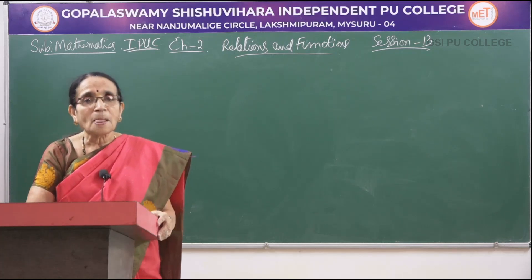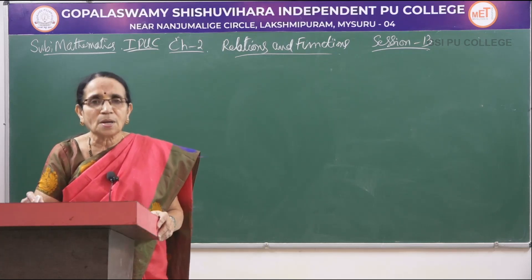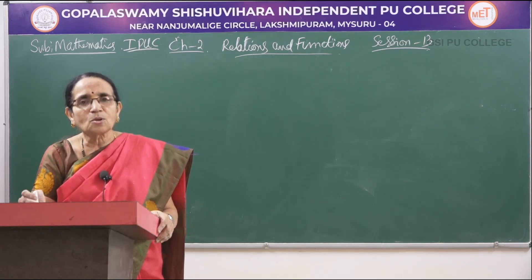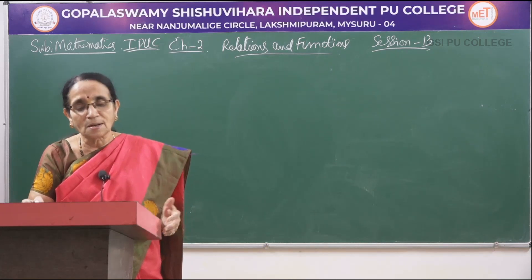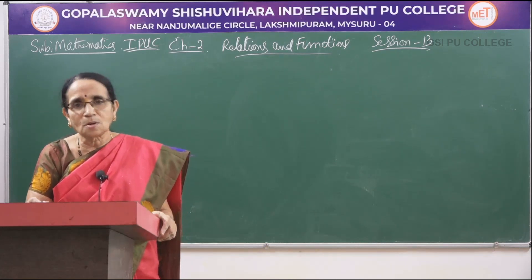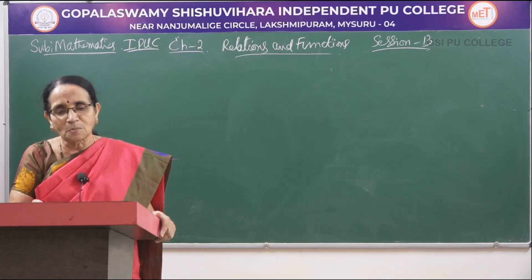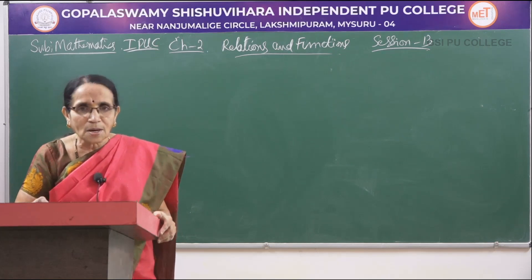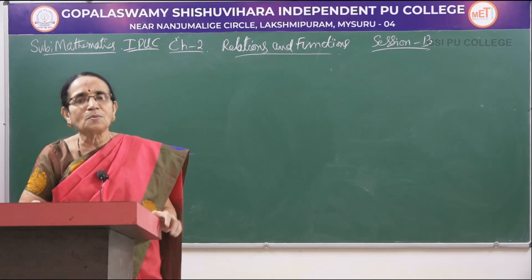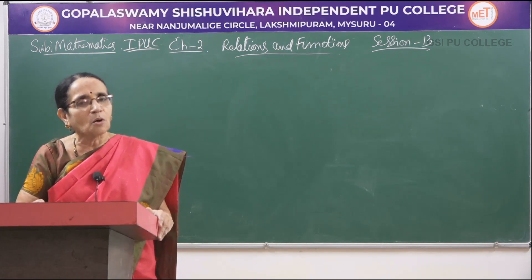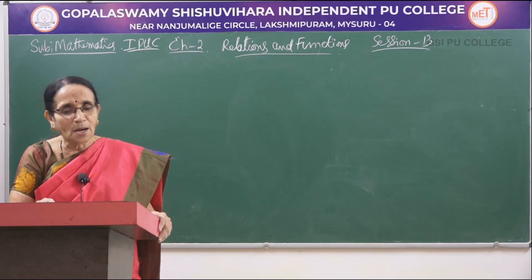The identity function means f(x) equal to x. The domain will be the set of real numbers and the range was also the set of real numbers. We drew the graph of that one, which was a straight line passing through the origin.